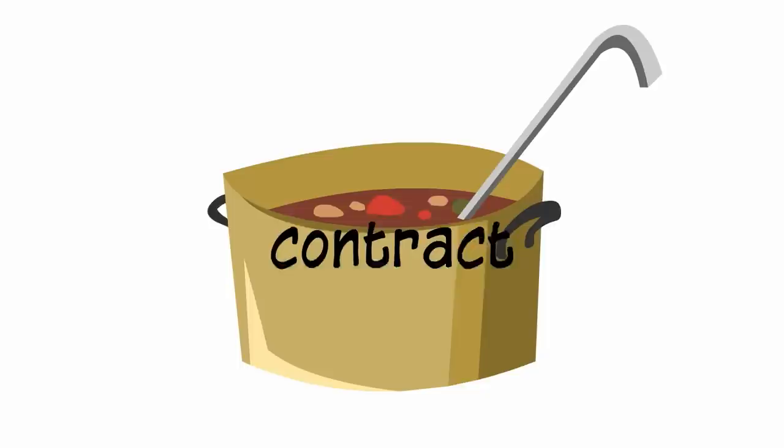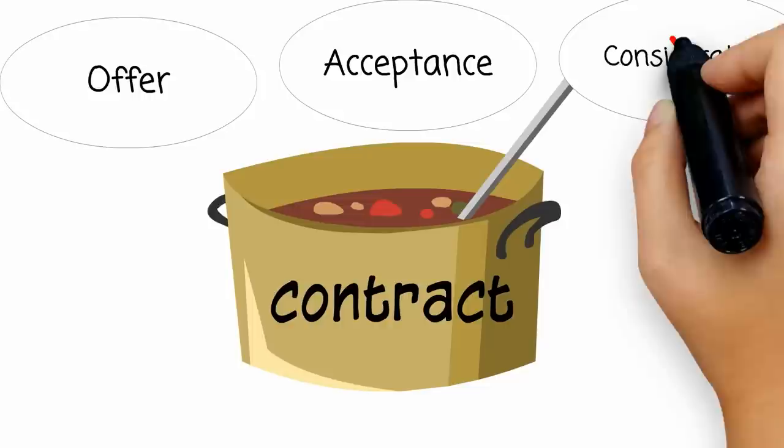Remember, for a contract we need three things: an offer, acceptance, and consideration. And if we don't have consideration, we don't have a contract.